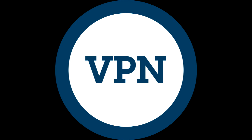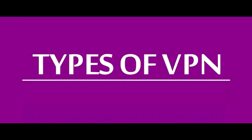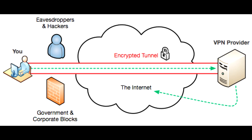In our last VPN video, we discussed VPN functionality and types. A VPN is a virtual private network that allows a user to connect to a private network over the internet securely and privately. VPN creates an encrypted connection known as a VPN tunnel, and all internet traffic and communication is passed through this secure tunnel, keeping user data secure and private.